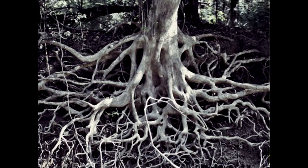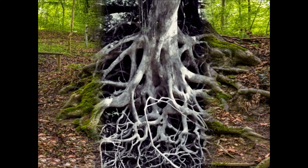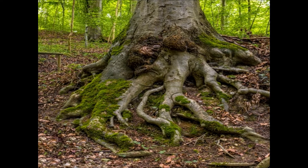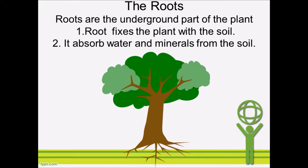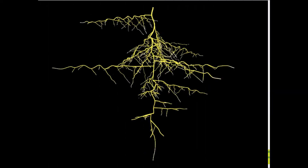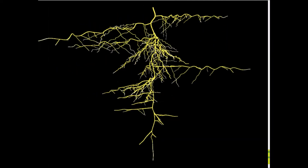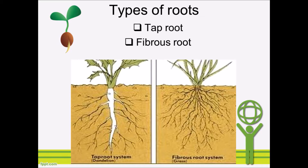Hello students, today we are going to learn about the different types of roots that are found in plants. Roots are the underground part of the plants. Root fixes the plant with the soil and it absorbs water and minerals from the soil. There are two major types of roots found in plants: one is tap root and the other is fibrous root.